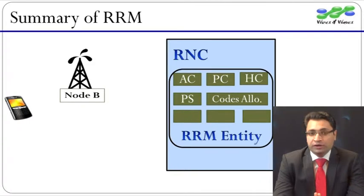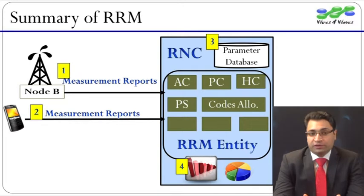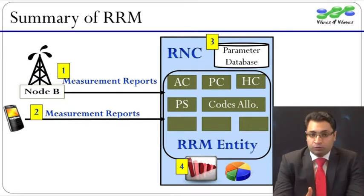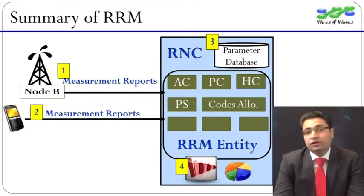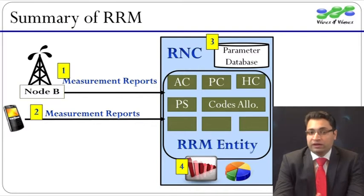RRM in UMTS is based in the RNC and it relies on four inputs, which are shown in this picture. First, the measurement reports coming from Node Bs. Second, measurement reports from connected UEs. Third, the parameters describing the cell configuration. And fourth, the internal measurements and calculations performed by the RNC.